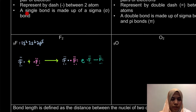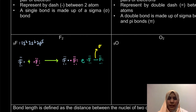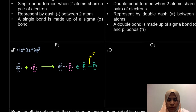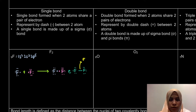A single bond is made up of a sigma bond — this is what we call a sigma bond. We'll look into more detail about sigma bond during section 4.3. I've mentioned lone pairs — lone pairs are pairs of valence electrons that do not involve in covalent bond formation.